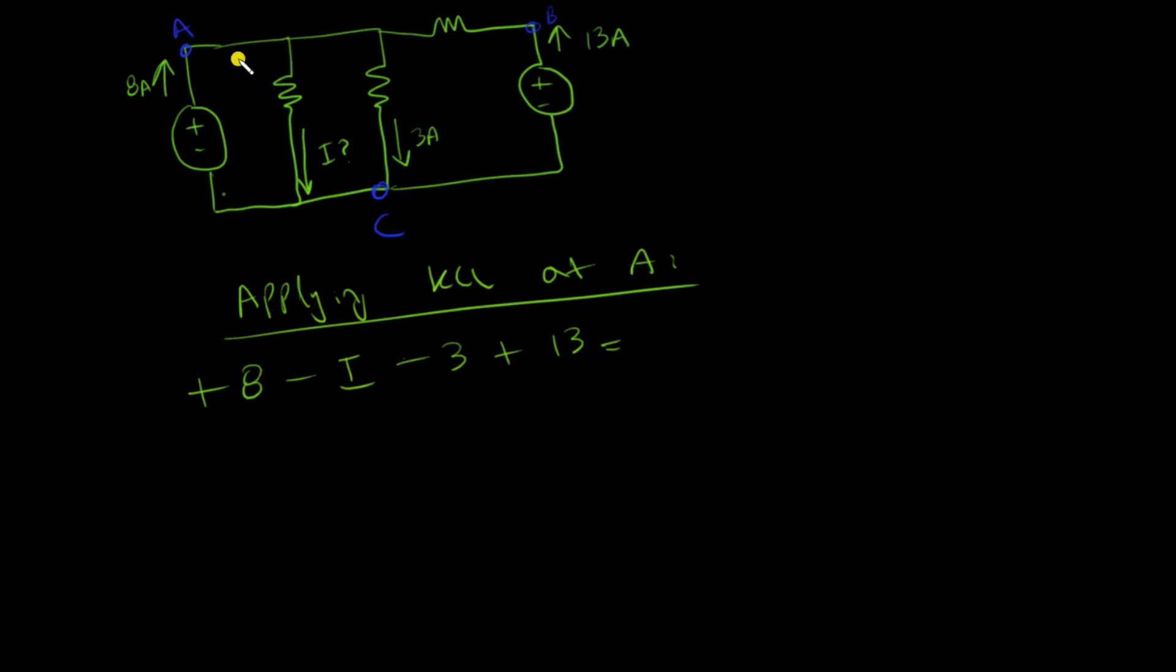These are all the branches connected to A, so this equals zero. Now I can use algebra to find I, which is 18 amps. This is how you apply KCL on a circuit.